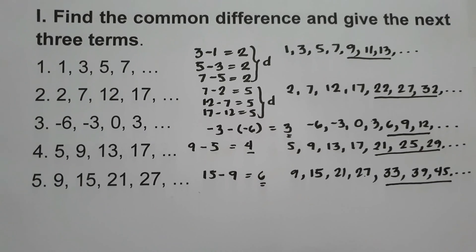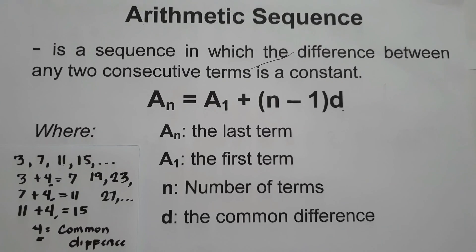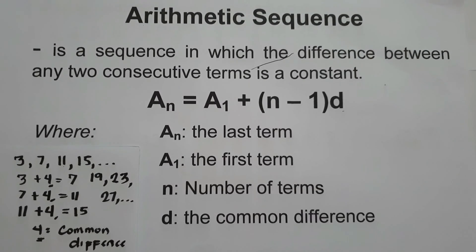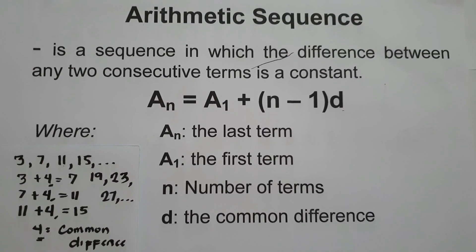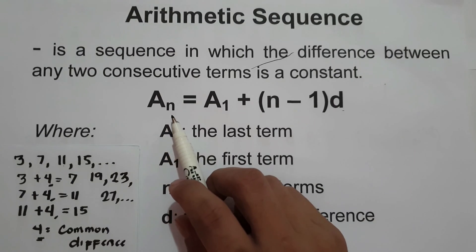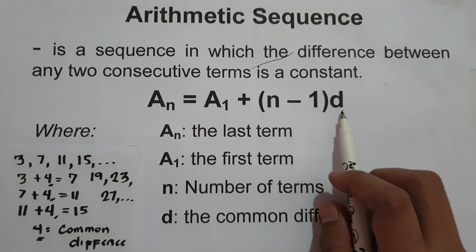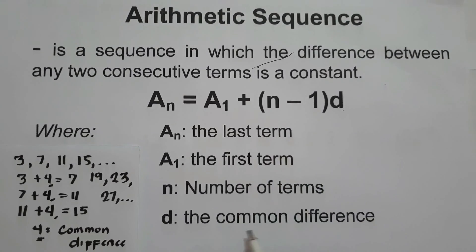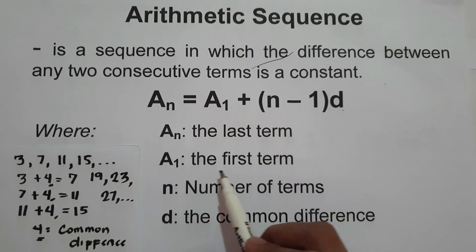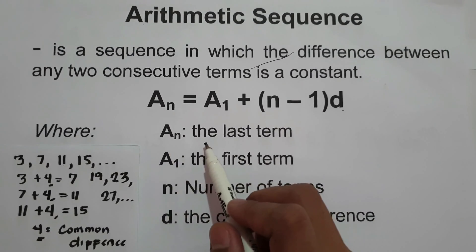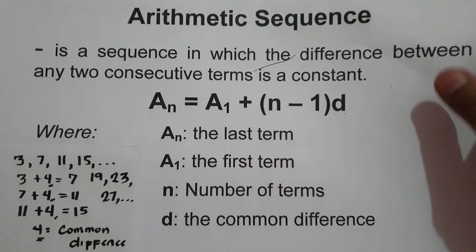So that's how you find the common difference and how to find the next three terms. This time, we are going to talk about how to find the nth term of the arithmetic sequence. To find the nth term of an arithmetic sequence, we are going to use the formula: A sub n equals A sub 1 plus the quantity of n minus 1 times d, where d is the common difference, n is the number of terms, A sub 1 is the first term, and A sub n is the nth term. Let's have an example.